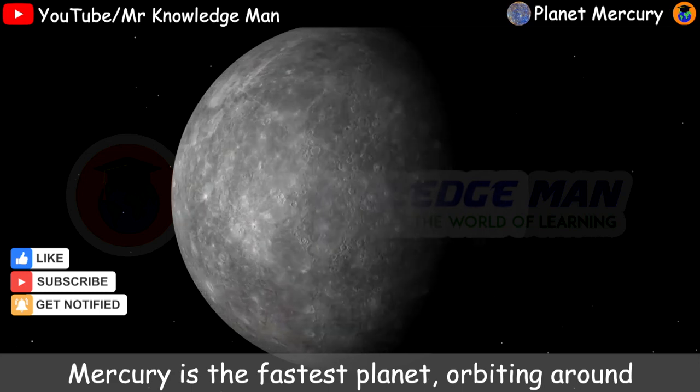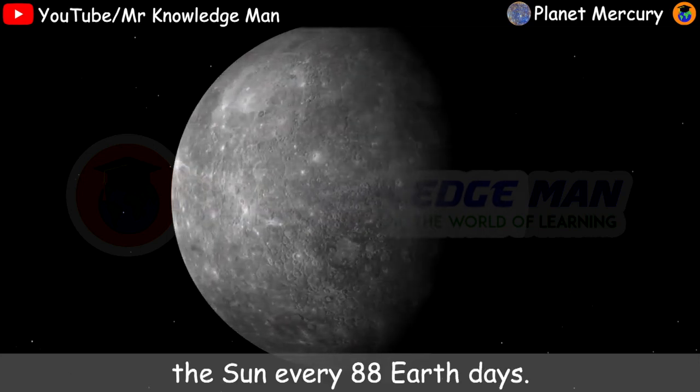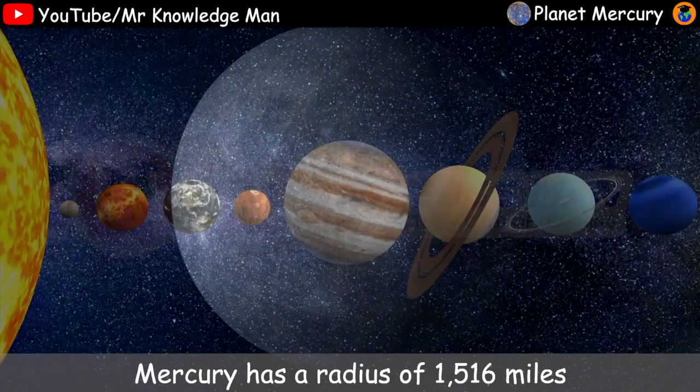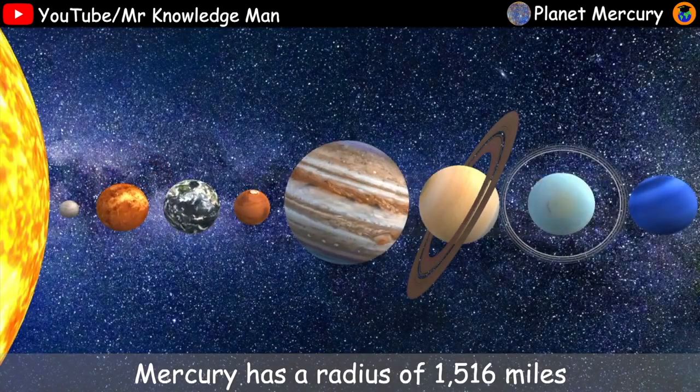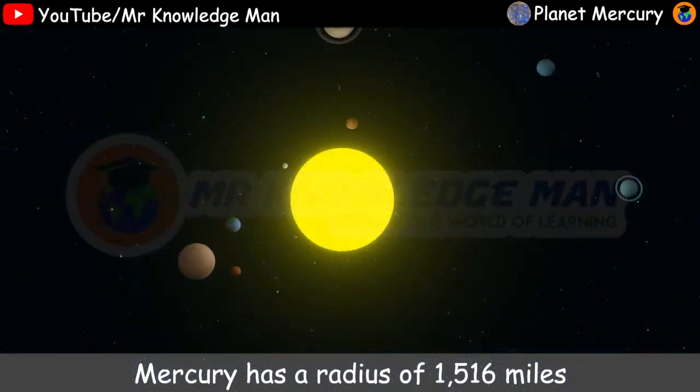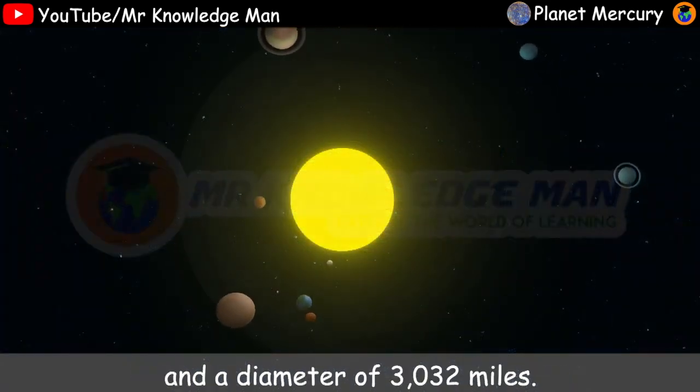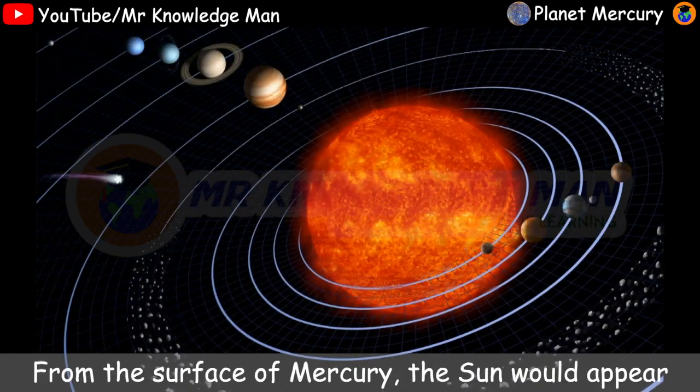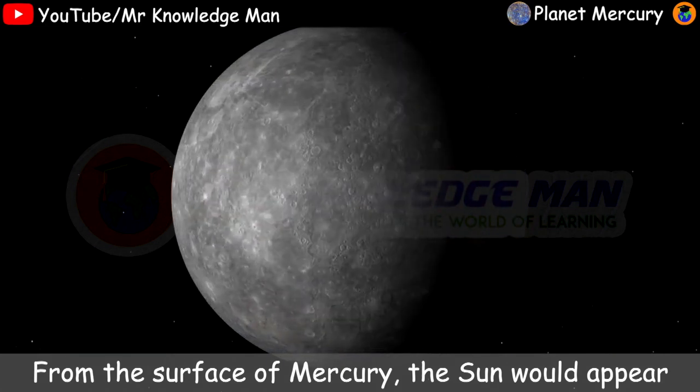Mercury is the fastest planet orbiting around the sun every 88 Earth days. Mercury has a radius of 1516 miles and a diameter of 3032 miles.